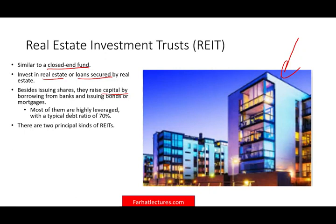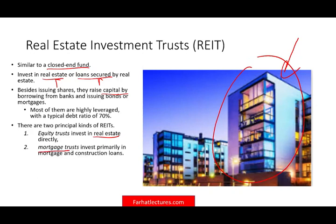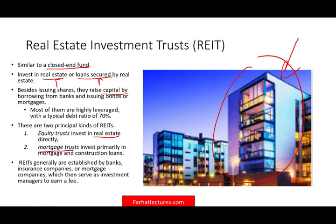There are two types of REITs. Equity trusts invest directly in real estate and physical structures. Mortgage trusts invest in mortgages and construction loans — they finance transactions rather than owning physical assets. REITs are generally established by banks, insurance companies, or mortgage companies, which then serve as the investment manager to earn a fee — typically a percentage of assets, though sometimes based on profits.